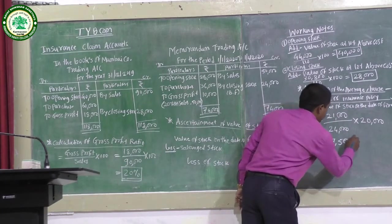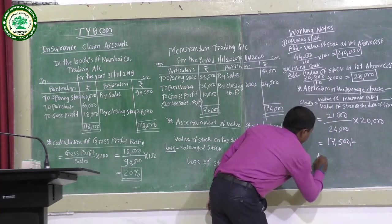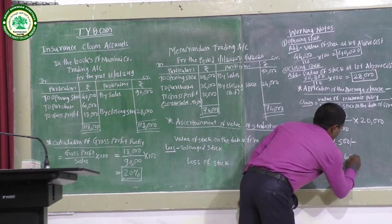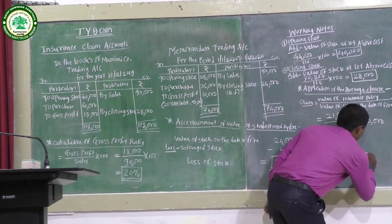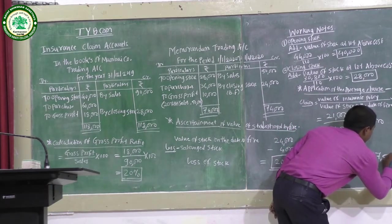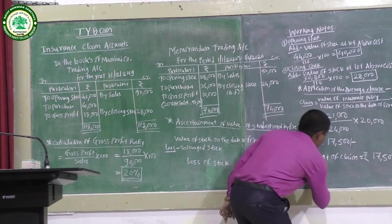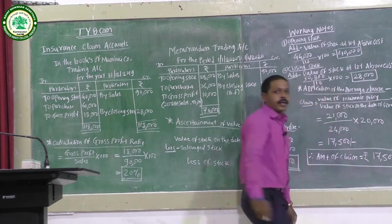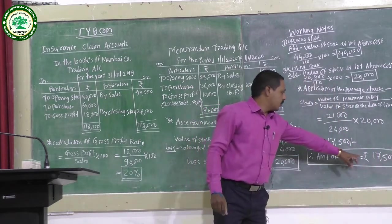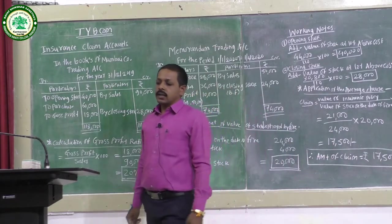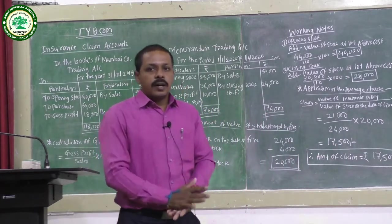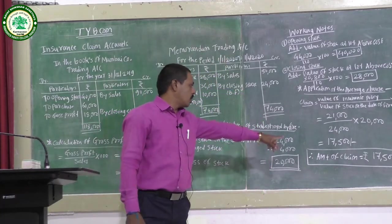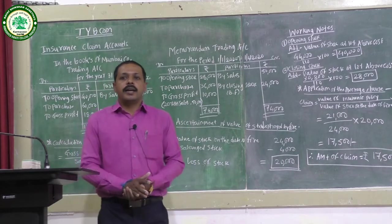The final calculated claim amount is Rs.17,500. This is the amount of insurance claim for loss of stock for Mumbai Company under the average clause.